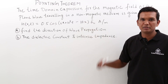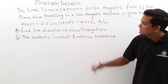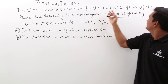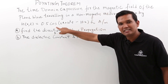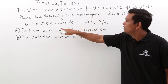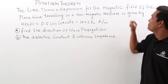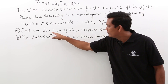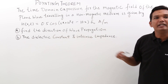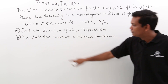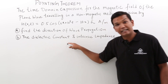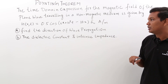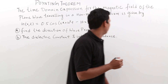In this class, we will try to solve this problem. There is a magnetic field given by an expression traveling in a non-magnetic medium. What is being asked is we have to conclude the direction of propagation and we have to find the dielectric constant and the intrinsic impedance.